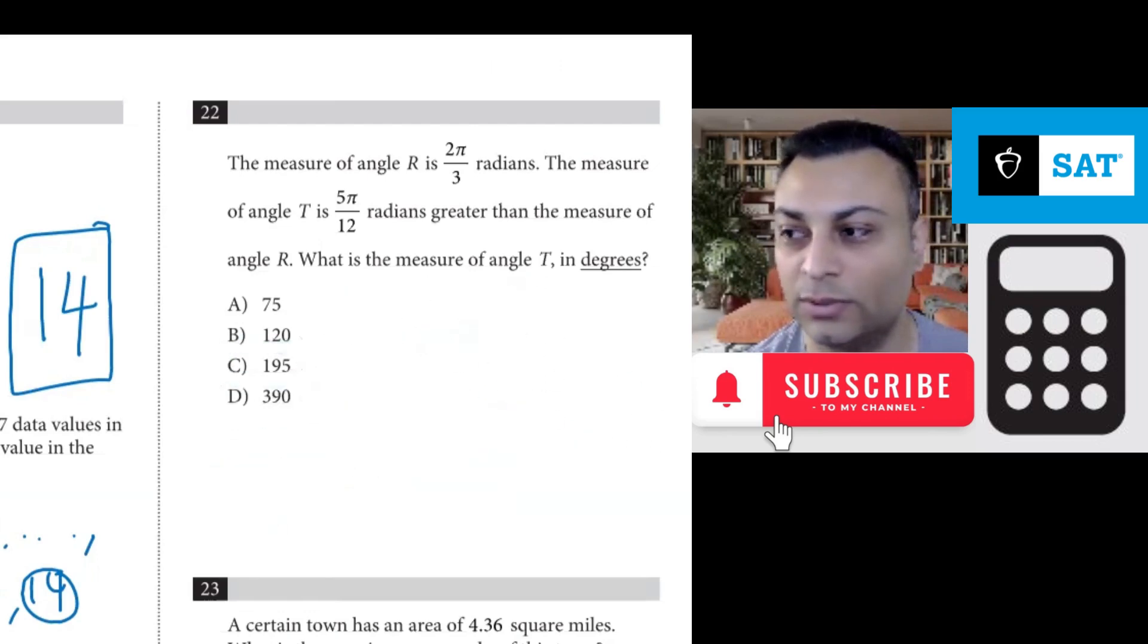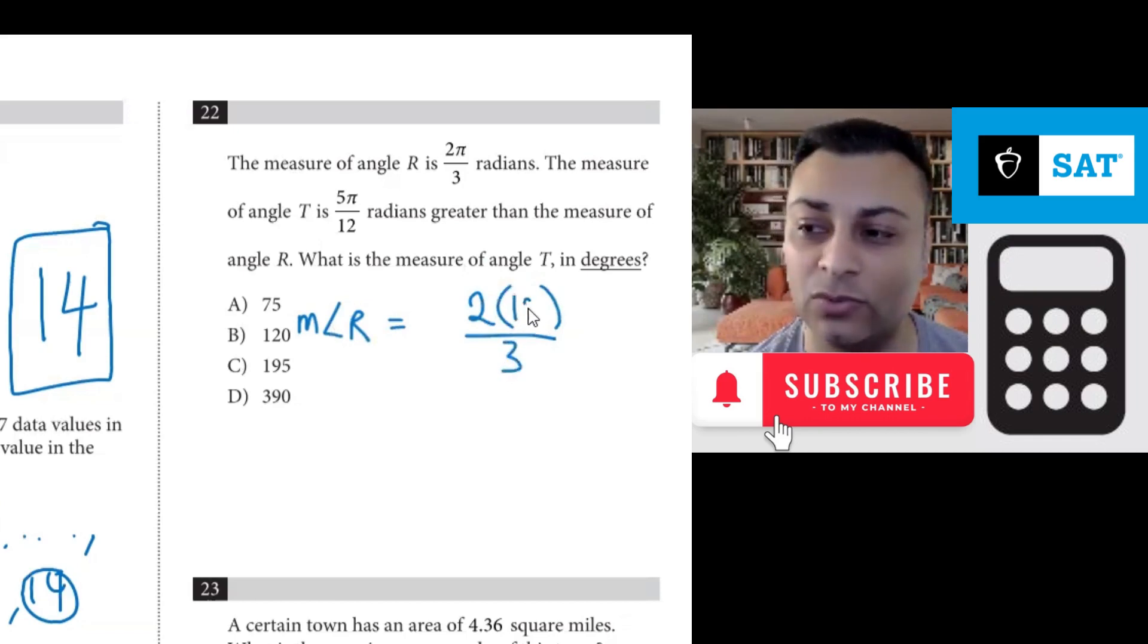Okay. So angle r is 2π/3. And so the measure of angle r is... Well 2π/3, what I want to do is convert that to degrees. So it's 2π/3. And we saw that π is 180. So 2 times 180 over 3.